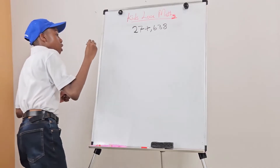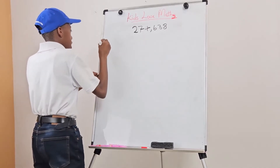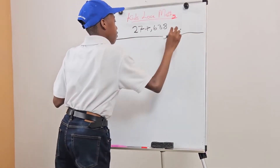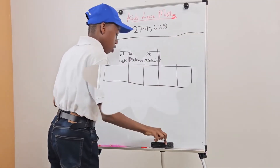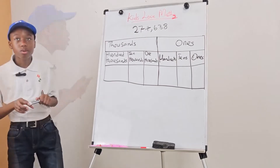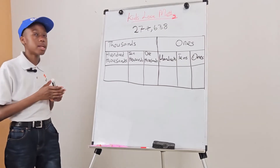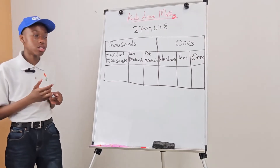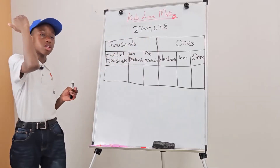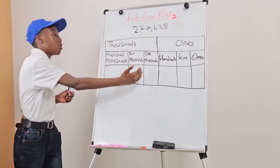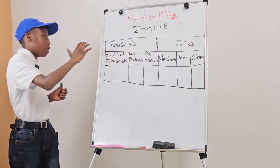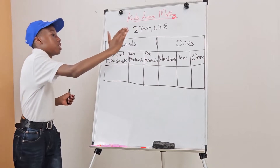Let's make the place value chart. You can see in the place value chart that we have six columns, and they're divided equally — three on this side, three on this side. Thousands and ones.